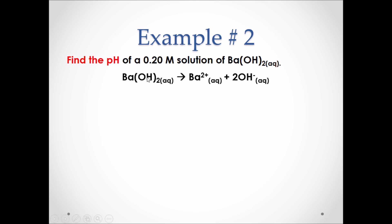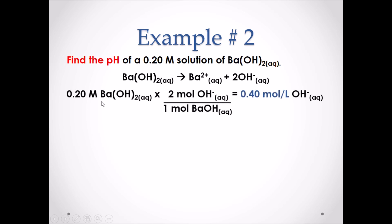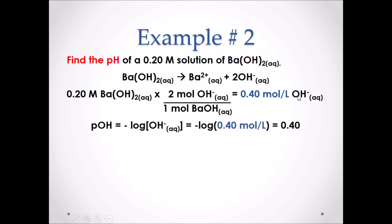Remember, barium hydroxide is an ionic compound and a strong base. Strong bases simply dissociate in water — they do not react with water. So we are dissociating to form the ions Ba²⁺ and 2 OH⁻. We start with the concentration of barium hydroxide and use the molar ratio — a 2 to 1 ratio — to find the moles of OH⁻. As a result, the concentration of OH⁻ in the solution is 0.40 moles per liter. Since we have the concentration of OH⁻, we can solve for the pOH: pOH equals the negative log of the concentration of OH⁻, giving a pOH of 0.40.